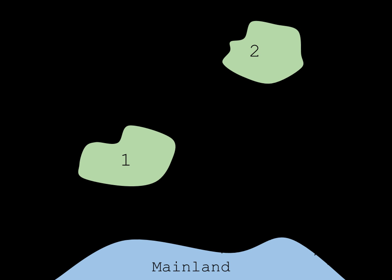Insular biogeography, or island biogeography, is a field within biogeography that examines the factors that affect the species richness and diversification of isolated natural communities. The theory was originally developed to explain the pattern of the species-area relationship occurring in oceanic islands. Under either name, it is now used in reference to any ecosystem that is isolated due to being surrounded by unlike ecosystems, and has been extended to mountain peaks, seamounts, oases, fragmented forests, and even natural habitats isolated by human land development.